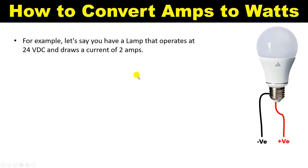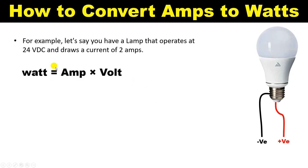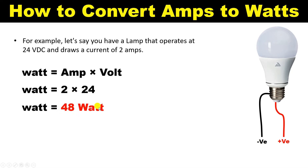Here I have a question. You have a lamp, and to operate this lamp, a 24V DC power supply is connected. After connecting the 24V DC power supply, the current flowing through this lamp is 2A. Now we have to convert this 2A into watt. The formula to use is: Watt equals ampere multiplied by voltage. Putting in the values: Watt = 2 × 24V DC, which gives us 48W.